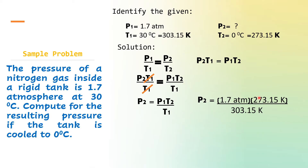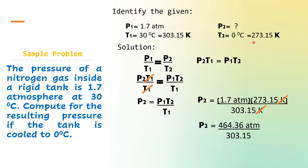Now, let us substitute. Our initial pressure is 1.7 atmosphere. Our final temperature is 273.15 Kelvin. And our initial temperature is 303.15 Kelvin. Cancel Kelvin to keep the desired unit, which is atmosphere. 1.7 multiplied by 273.15 gives 464.36 atmosphere, which will be divided by 303.15. Going back to our given, pressure is directly proportional to temperature. The initial temperature, 303.15 Kelvin, is higher than the final temperature.